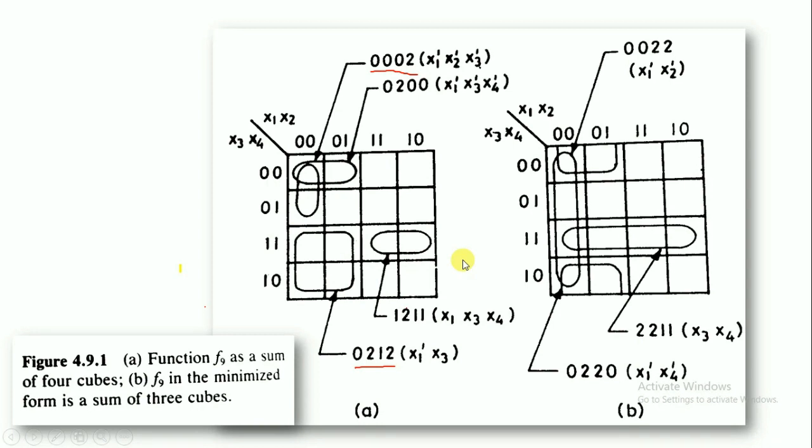The first cube is 0212 and the next cube is 0002. When you combine these two cubes, 0212 and 0002, you will get the cube 0022.